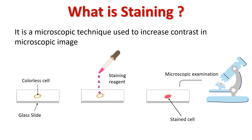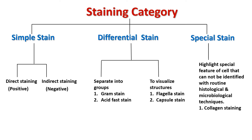Staining makes them highlighted and they can be visualized better under a microscope. There are three types of staining categories: first is simple stain, second is differential stain, and third is special stain. Simple stain is further divided into two groups: direct staining, also known as positive staining, and indirect staining, also known as negative staining.